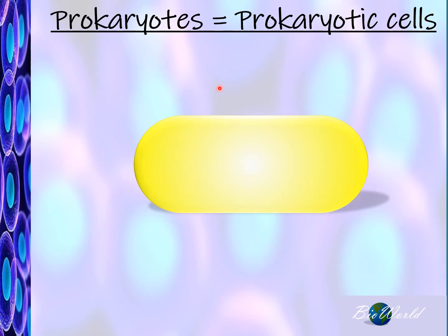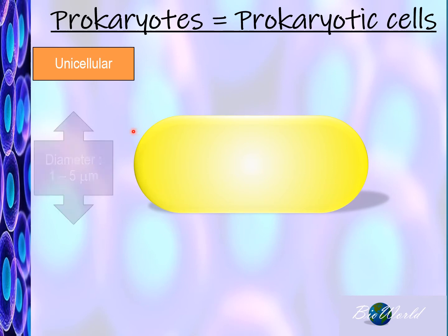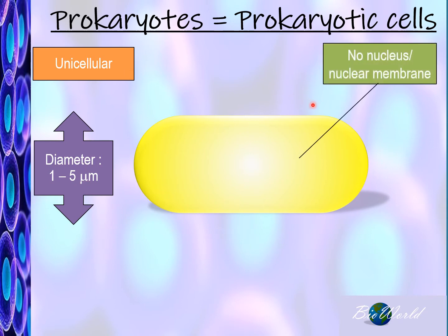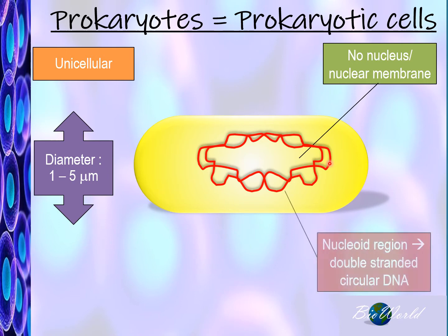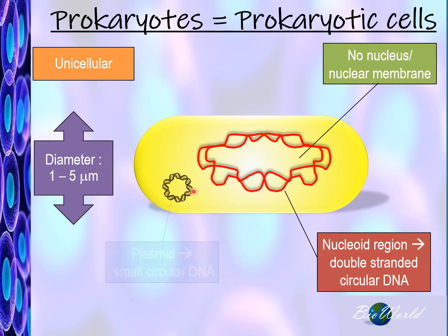Prokaryotes, better known as bacteria, are unicellular and small, measuring between 1 and 5 micrometers. As understood from the name, they do not have a nucleus or a nuclear membrane, but they do have DNA. The DNA is located in the middle of the cell in a region called the nucleoid region, and unlike human DNA, it is not in the form of a chromosome — instead, it is circular. Some prokaryotes also have an extra, much smaller DNA called a plasmid.